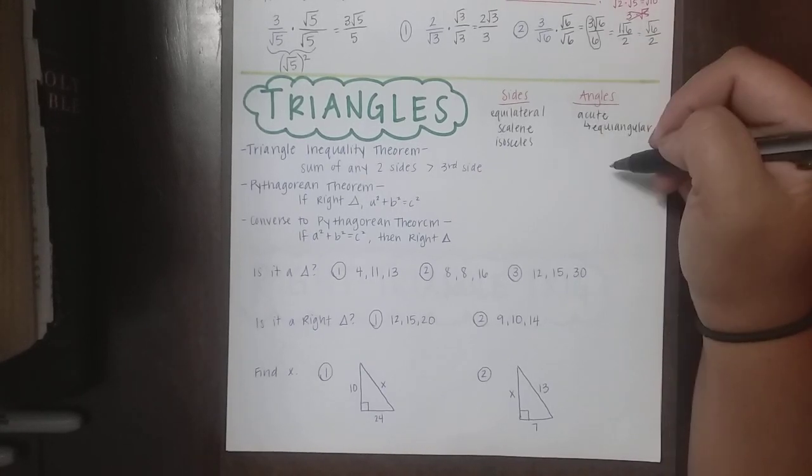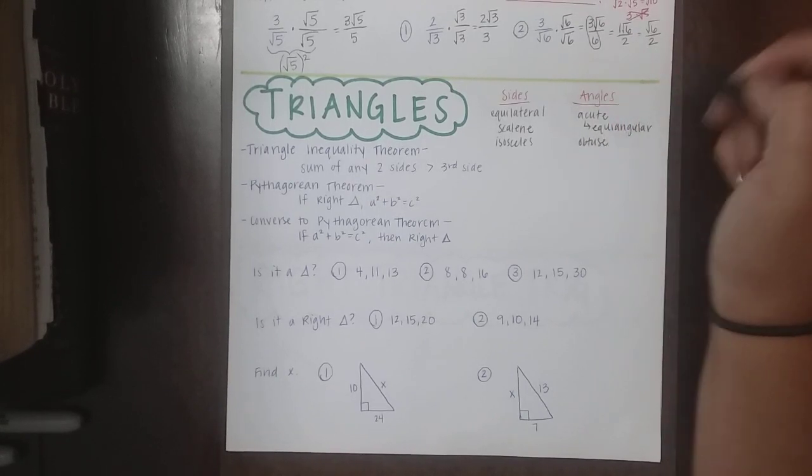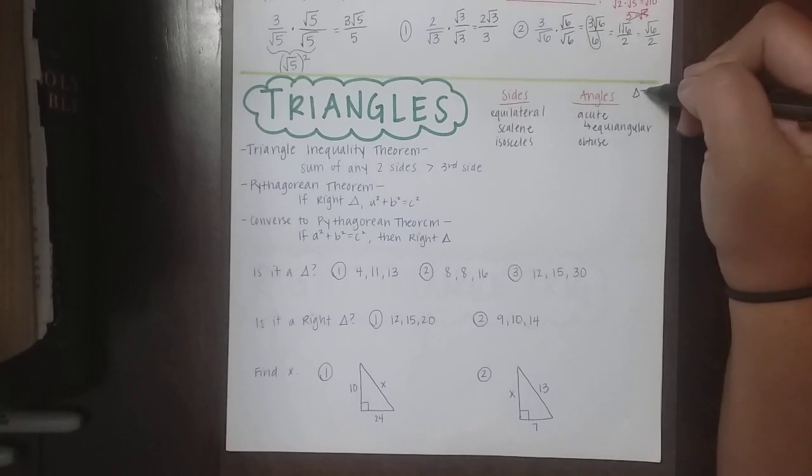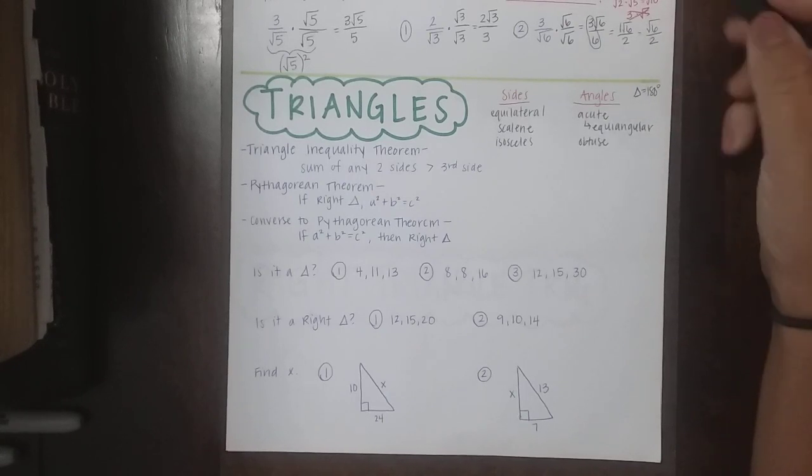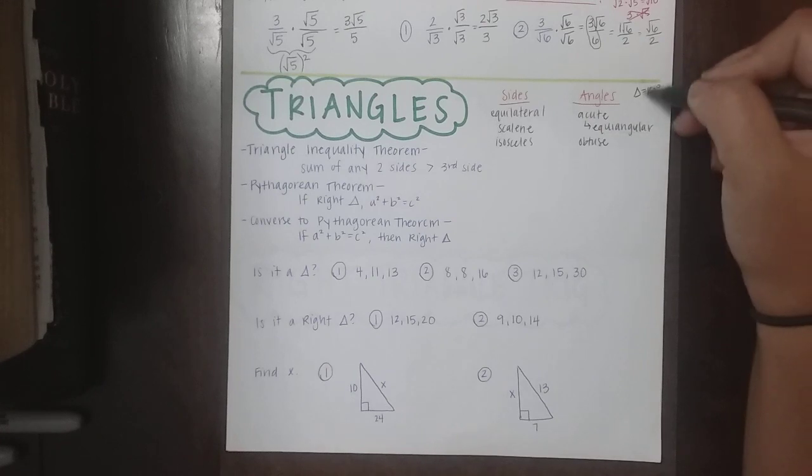If I have one obtuse angle, it's going to be an obtuse triangle. And a side note on that, we know a triangle has 180 degrees and an obtuse angle is more than 90. So if I have one angle that's more than 90, I can't have any other angles more than 90 or it'll bust the 180 maximum.